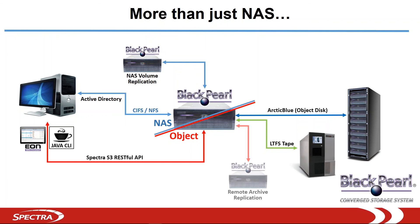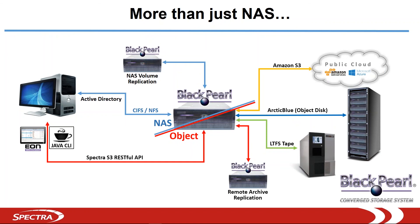For disaster recovery, we can set up bi-directional active-active replication to another BlackPearl at a remote site. This is an excellent option that ensures critical assets in your archive stay readily available. Alternatively, we can replicate to a public cloud for a simple off-site DR option. Most importantly, we do all of this seamlessly in the background. With our internal data policy engine, you set the policy for your object bucket, you write the data to BlackPearl once, and we take care of the rest — creating and maintaining as many copies of your data as you like in whatever locations you need, with both permanent and temporary persistence rules that you can set.